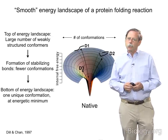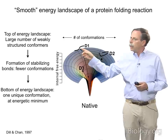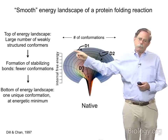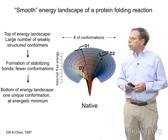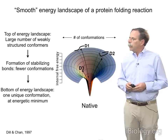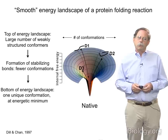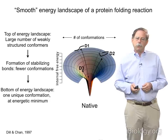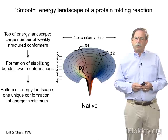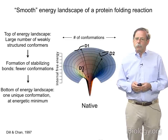One can think of Anfinsen's experiment in terms of protein folding on what is called a smooth energy landscape. At the top are a host of random coil conformations with a large number of weakly structured conformers, lots of entropy and very little in the way of stabilizing contacts. As the polypeptide chain folds, it gains stabilizing contacts, there are fewer conformations, and it goes down the energy landscape like a ski slope, ultimately winding up at the bottom in the native state — a unique energetic minimum.